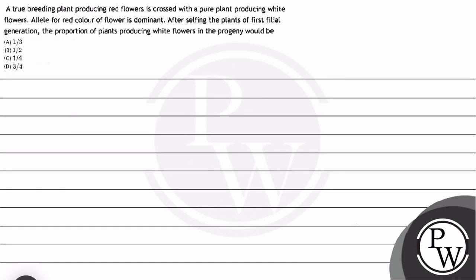Hello Makkale. Here is the question we will solve: A true breeding plant producing red flowers is crossed with a pure plant producing white flowers. Alleles for red color of flower is dominant.